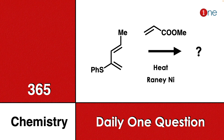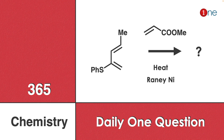Welcome to One Chemistry. This is the 365 Chemistry Series — one question daily. Here you have a conjugated diene with a thio ether and a methyl group, reacting with an olefin ester and heating it up, followed by Raney nickel. You have to determine what the final product will be.